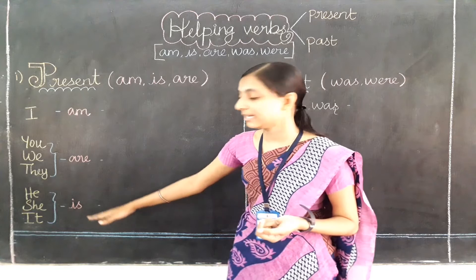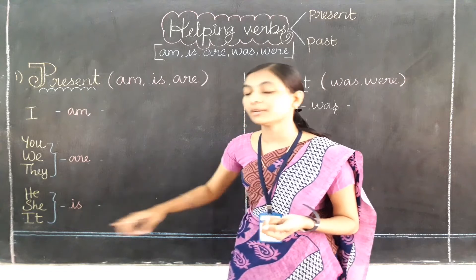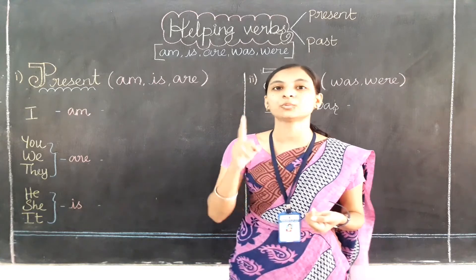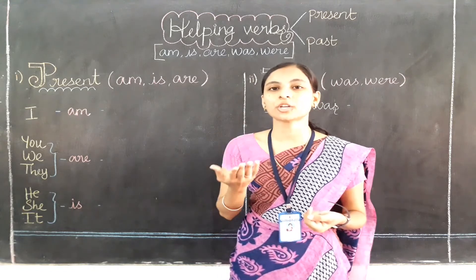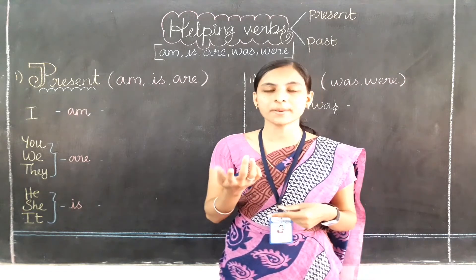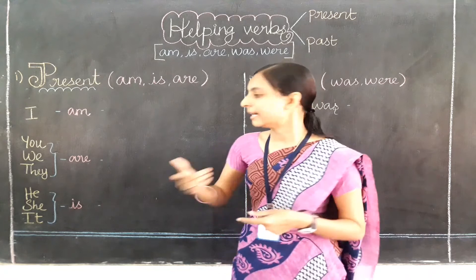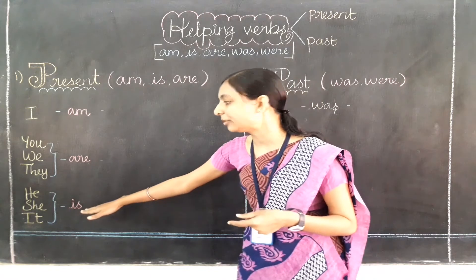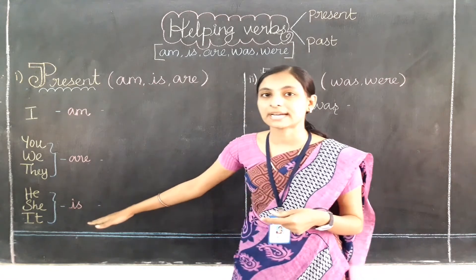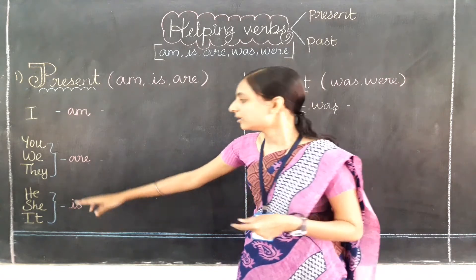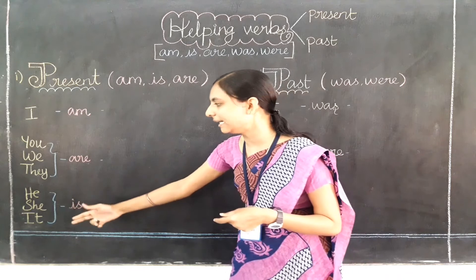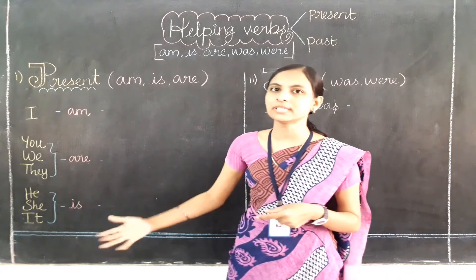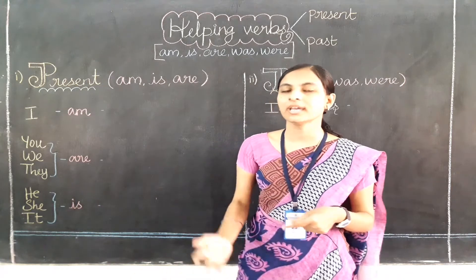'Is' is used for only a single person. When you are talking about a single person's name, you use 'is'. For the pronouns he, she, it, we use 'is'.